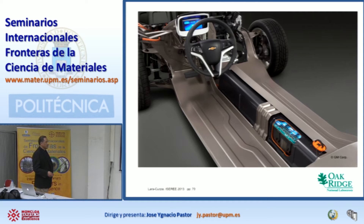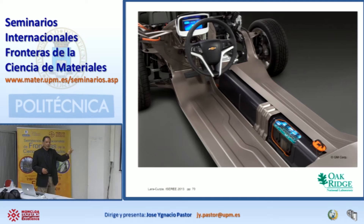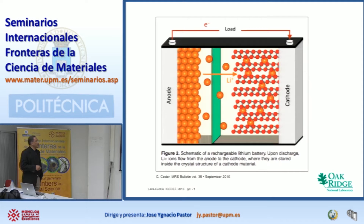We discussed batteries at one point. Remember the five things we investigate for batteries: safety, energy density, power density, cost, and durability. Here we have a group from MIT — Professor Ceder — looking at lithium-ion batteries. The way a lithium-ion battery works is fairly simple: you have an anode, you have a cathode, and it is the diffusion of lithium ions between the electrodes through a membrane and a liquid electrolyte that provides the flow of electricity.